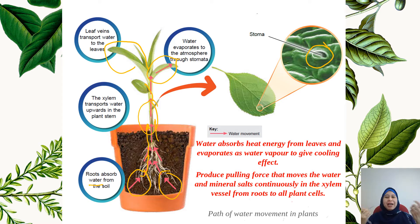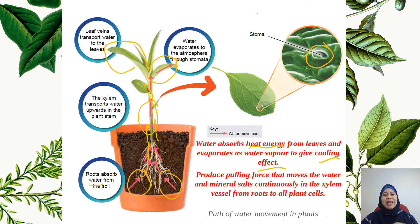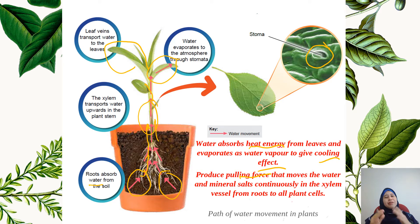Now, why is this process important in plants? First, water is able to absorb heat energy from the leaves and evaporate as water vapor, which gives a cooling effect to the plant. Second, the movement of water up through evaporation produces a pulling force that moves water and mineral salts continuously in the xylem vessel, from the root up to the plant cells in the leaves.